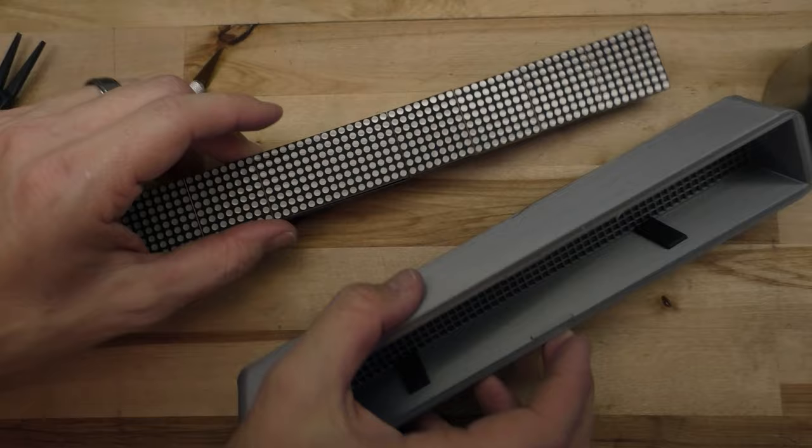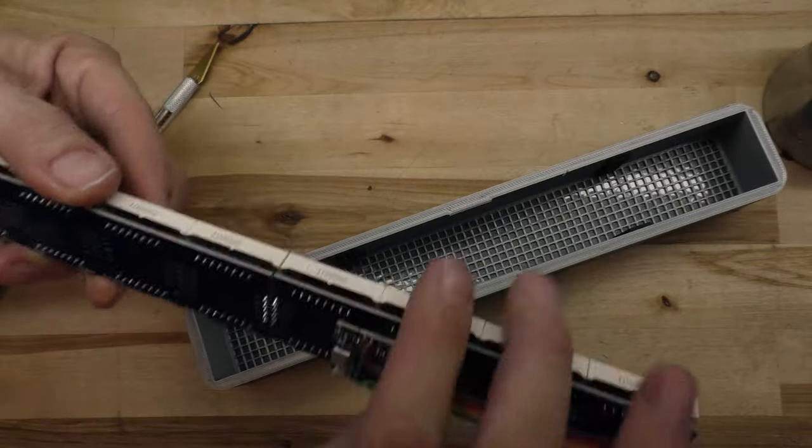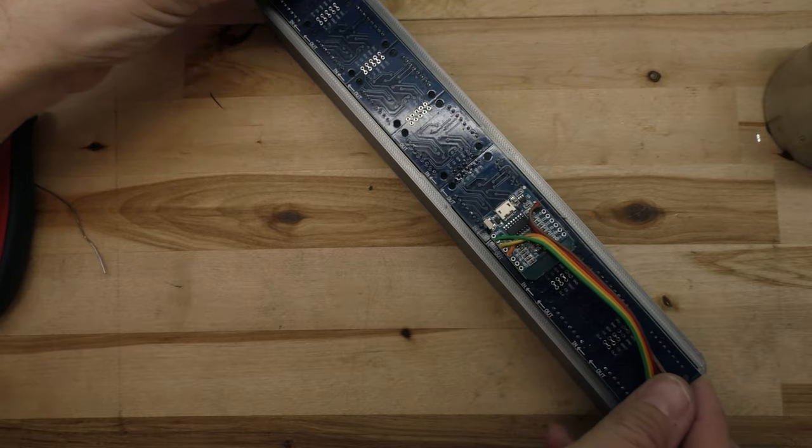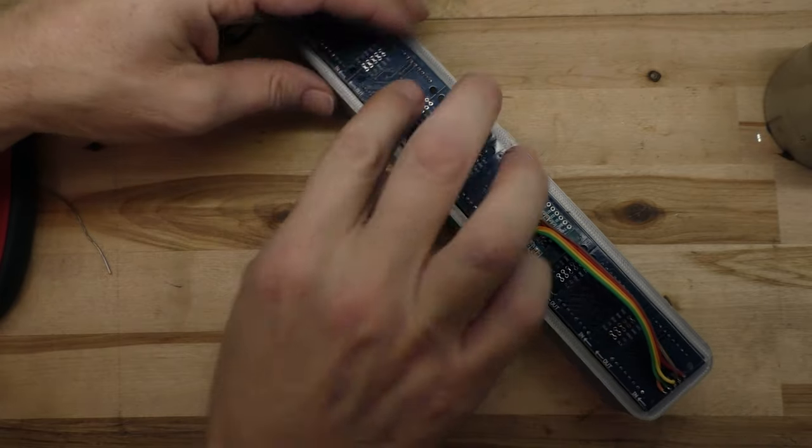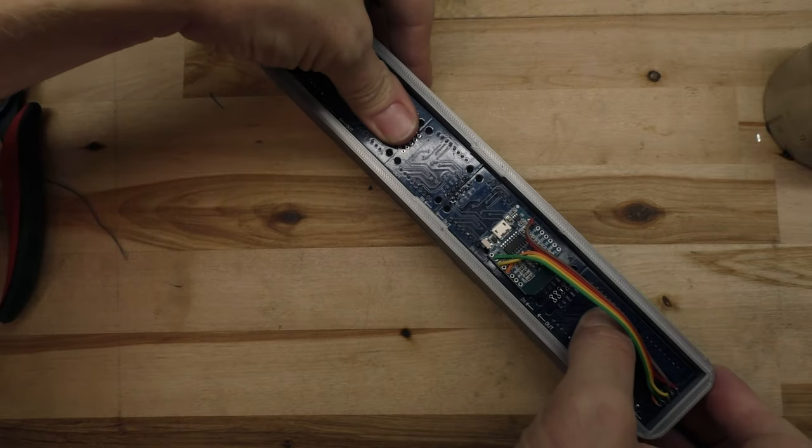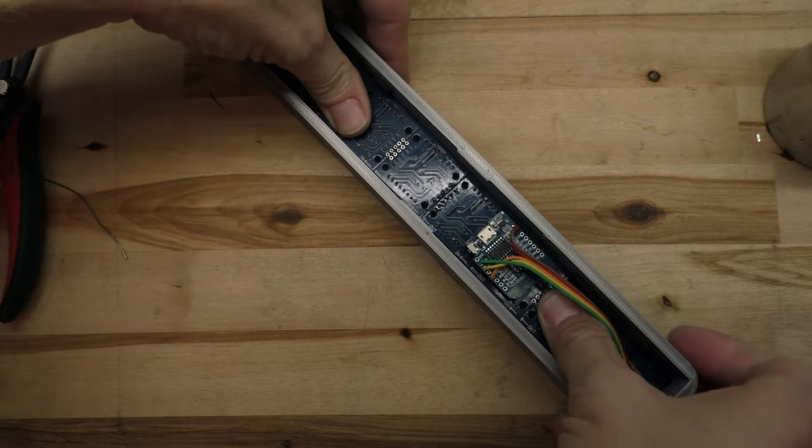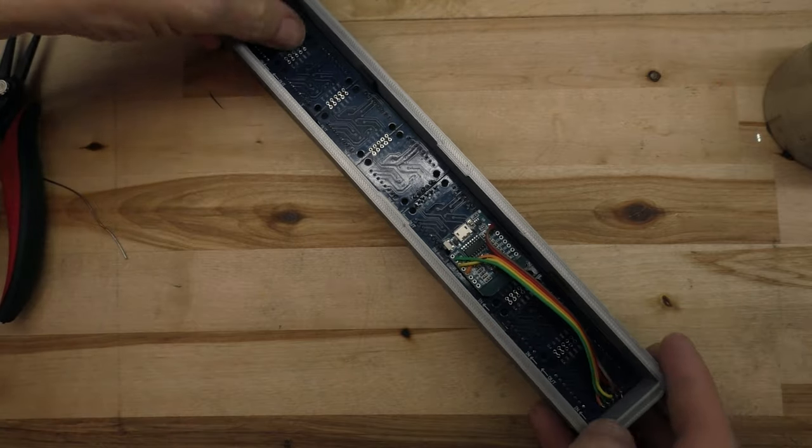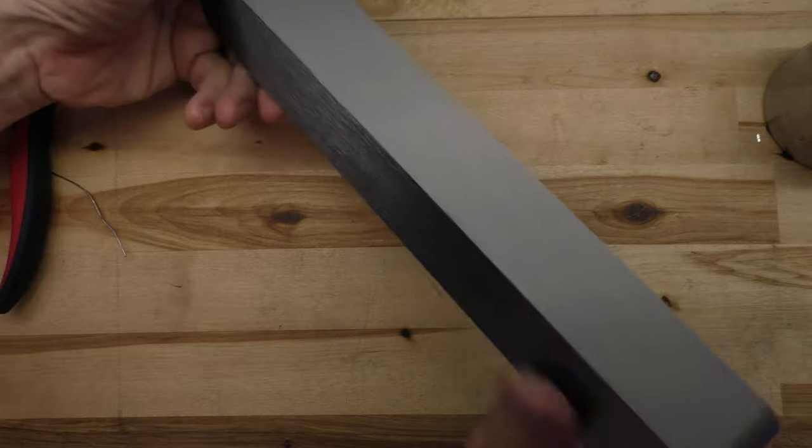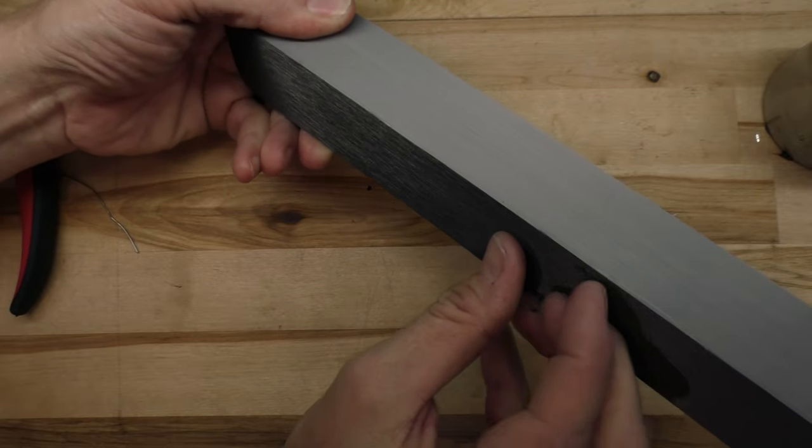So now we have our electronics. We have our case. We need to assemble the two. And we're just going to push this down in there. And be careful not to get those foam pads to roll up. Just going to push that down. And boom. I designed it so it has a little bit of wiggle room. So you can scoot it left or right, depending on how it lines up with the front pixels.